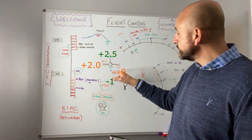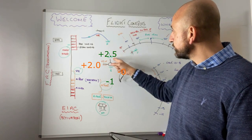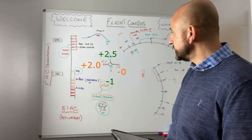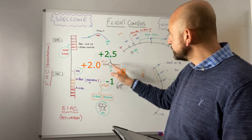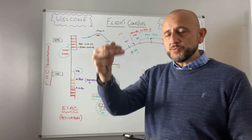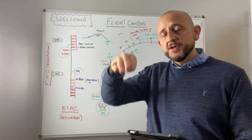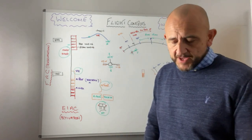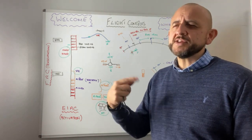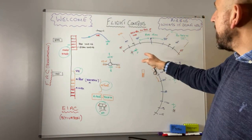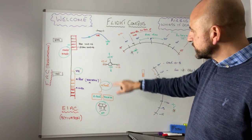For load factor protection: in the clean configuration it's plus 2.5g to minus 1g, and in other configurations it's plus 2g to zero. This is why when you have flap out — say flap 2 intercepting the glideslope — the aircraft doesn't really pitch forward to compensate when you select flap 2, because it doesn't like negative G in that configuration. On the NEOs there is a slight trim compensation when selecting flap 2.